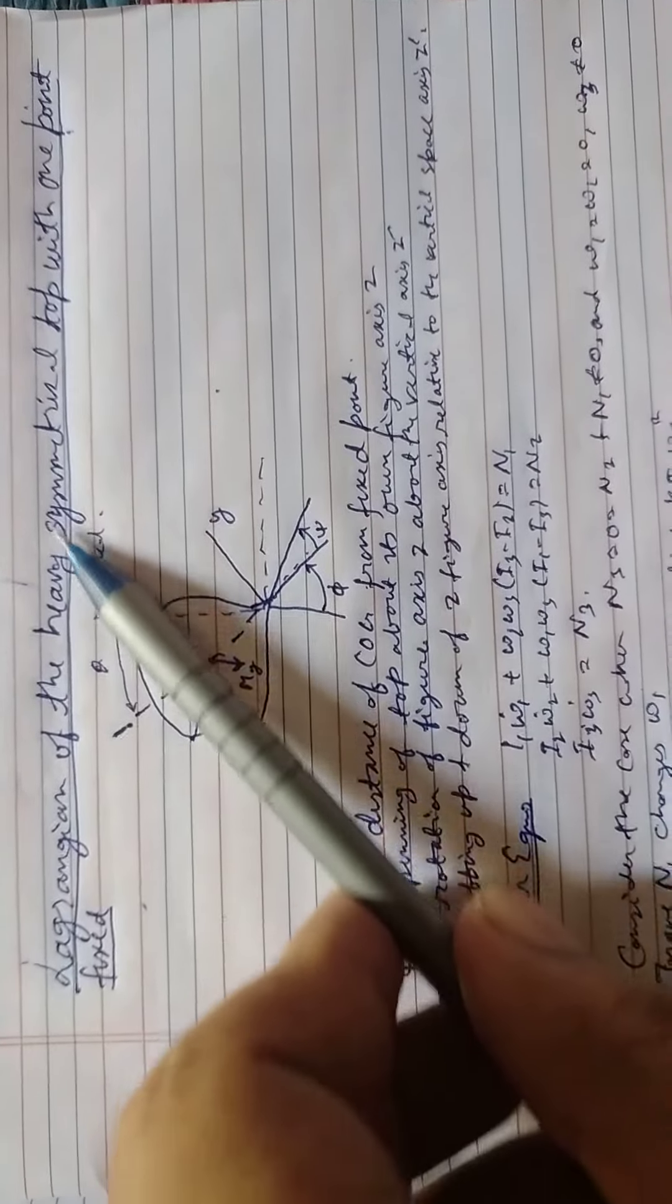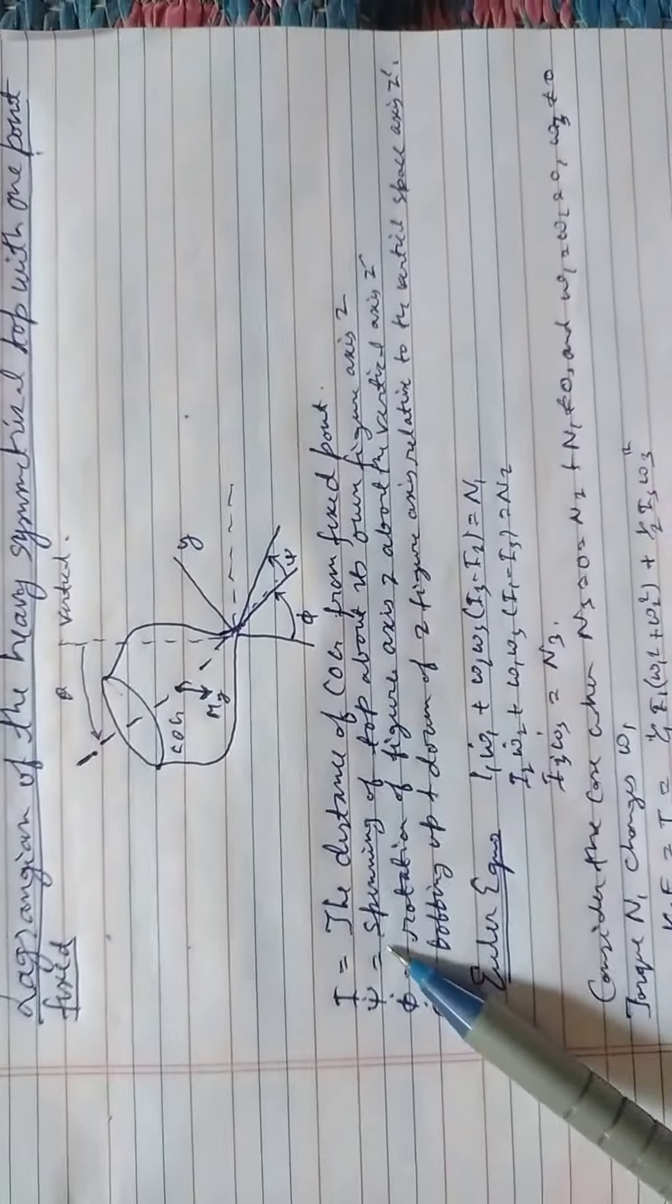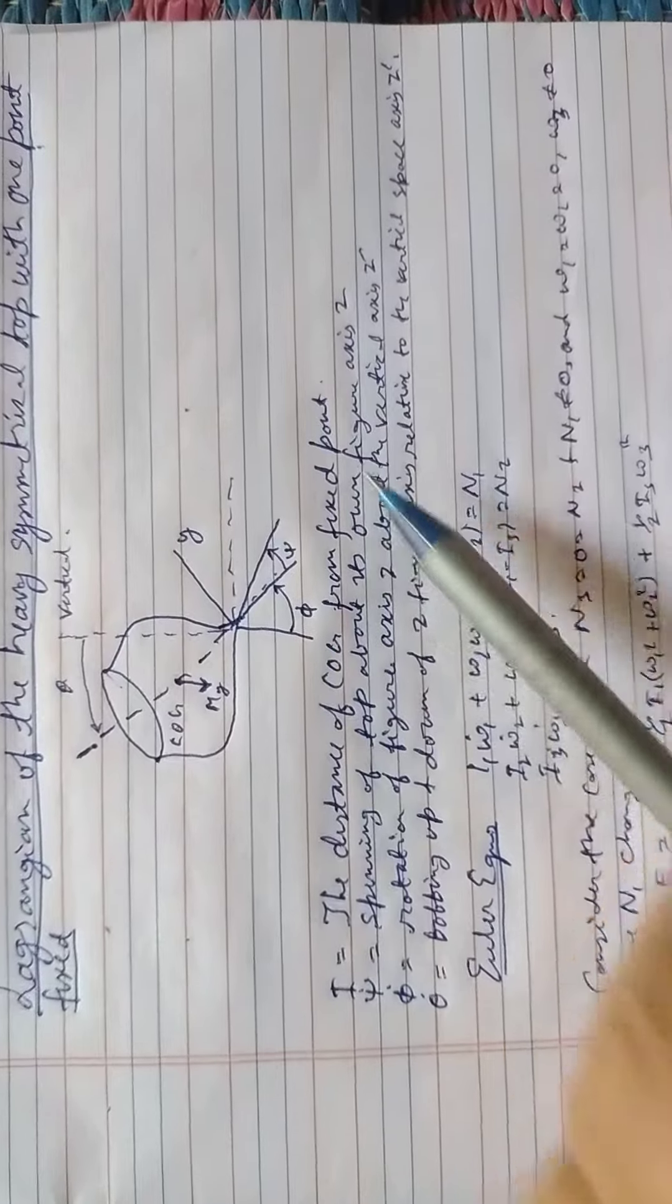Hi friend, today's topic is Lagrangian of the heavy symmetrical top with one point fixed. I is equal to distance of COG from the fixed point.